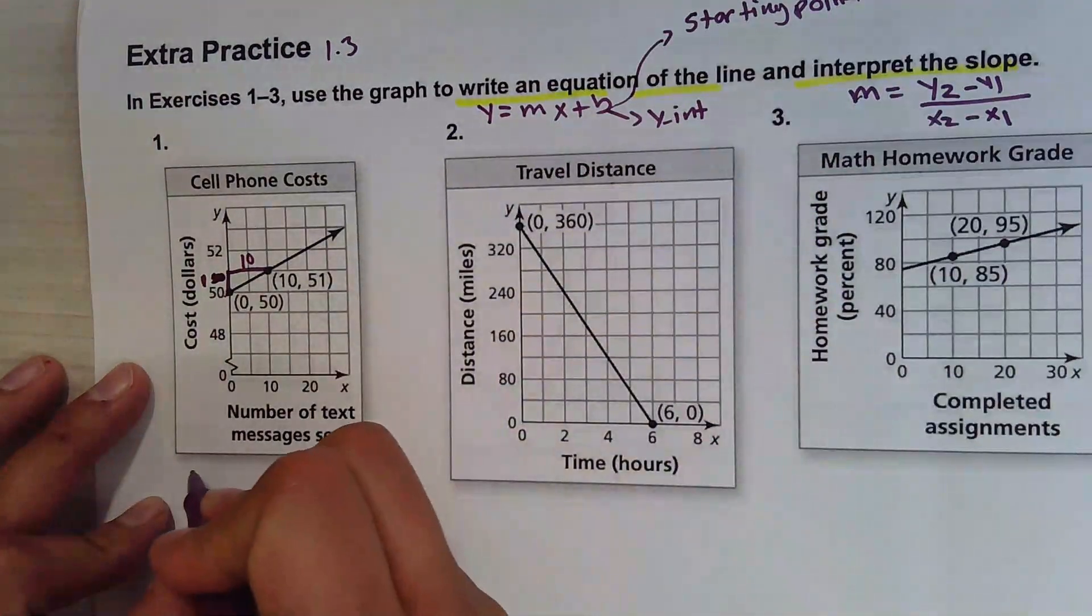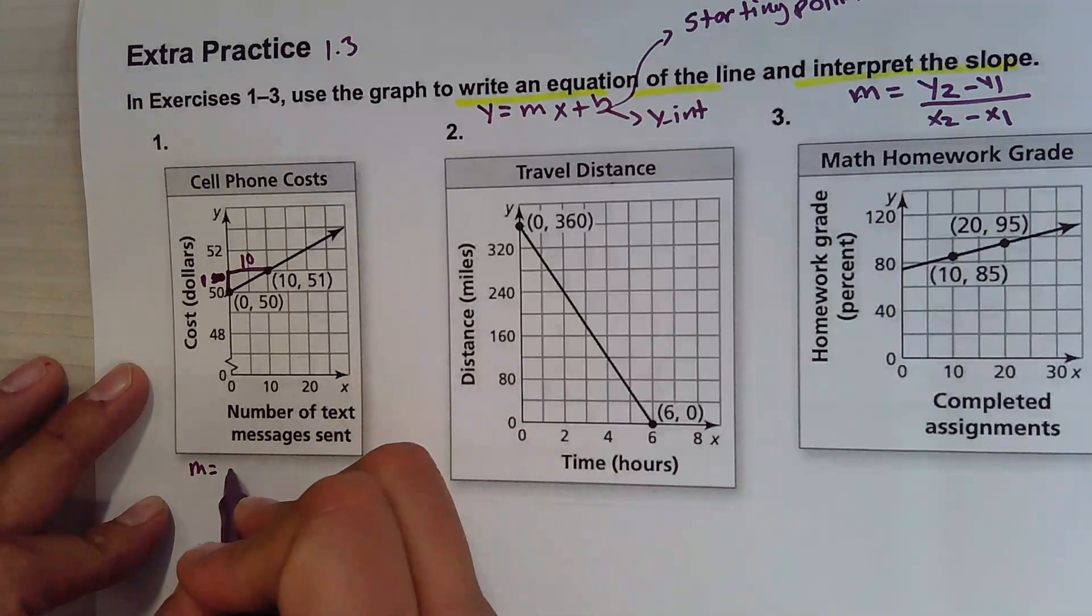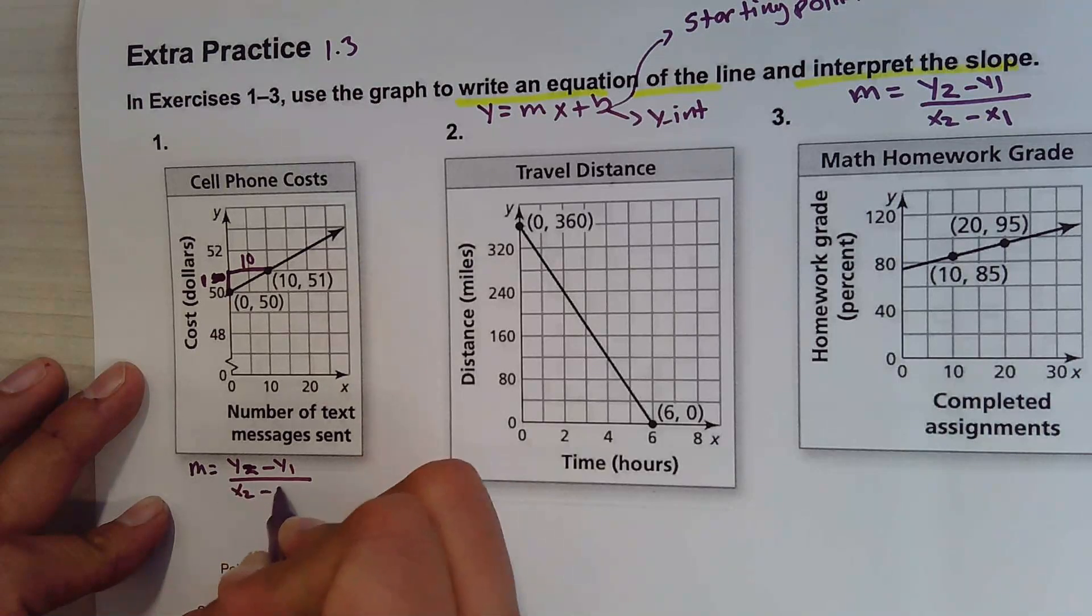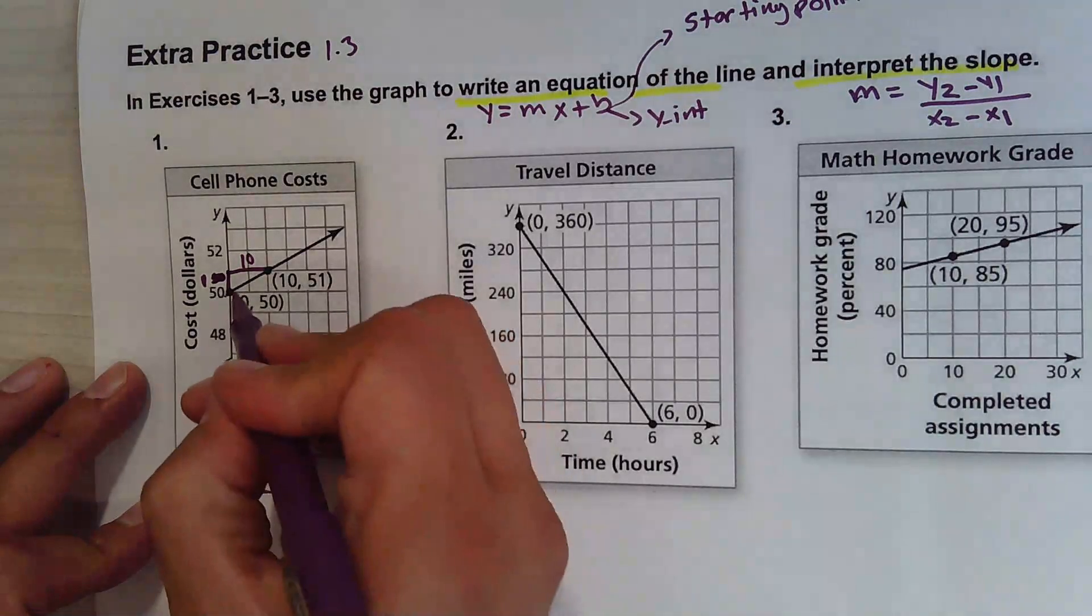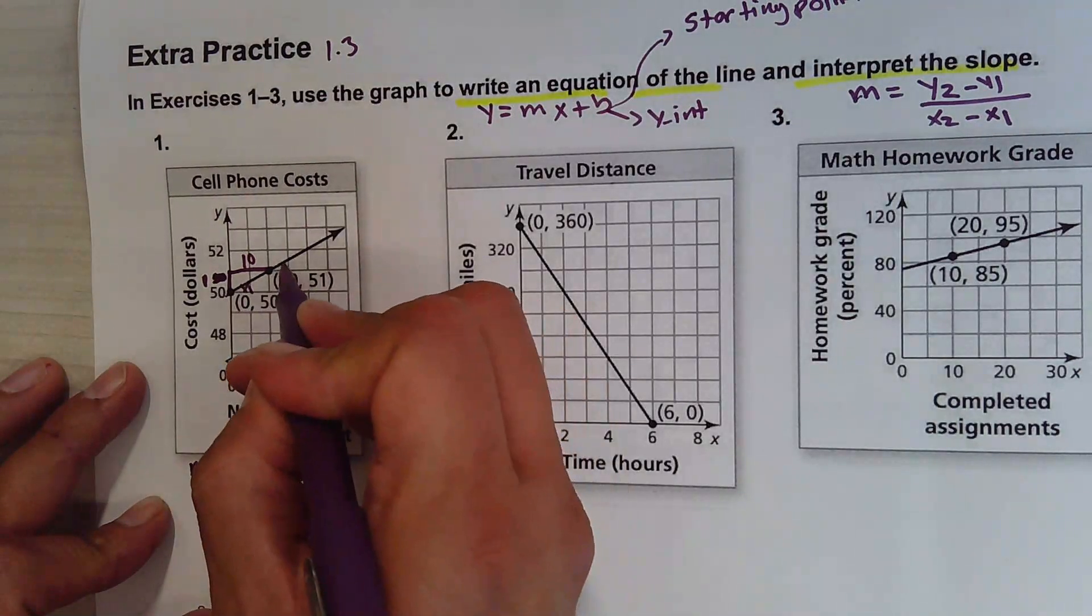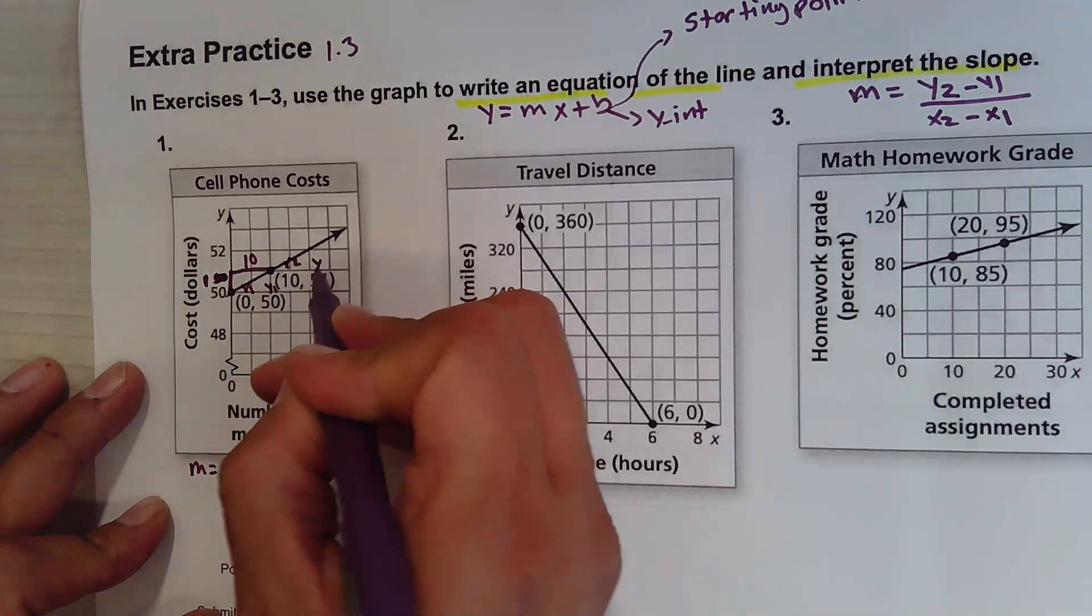So here's the formula: y2 minus y1 over x2 minus x1. This is x1, this is x2, this is y1, this is y2.